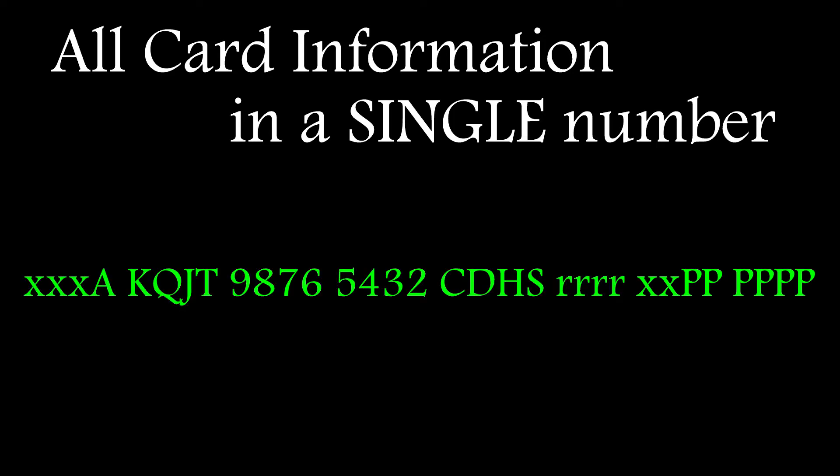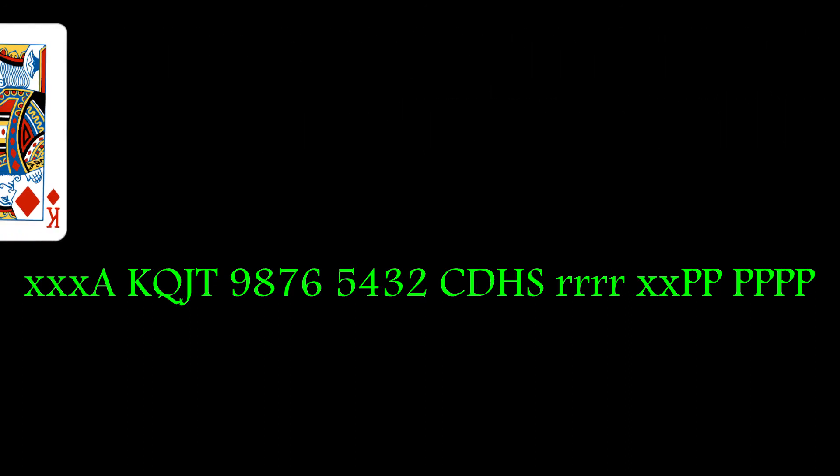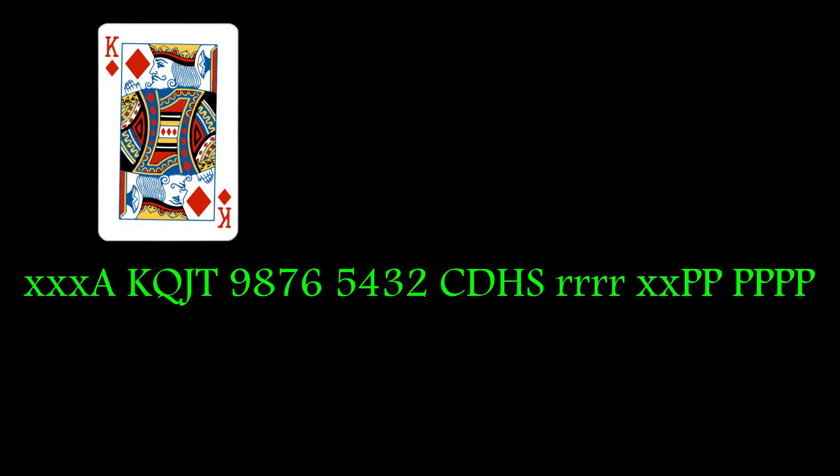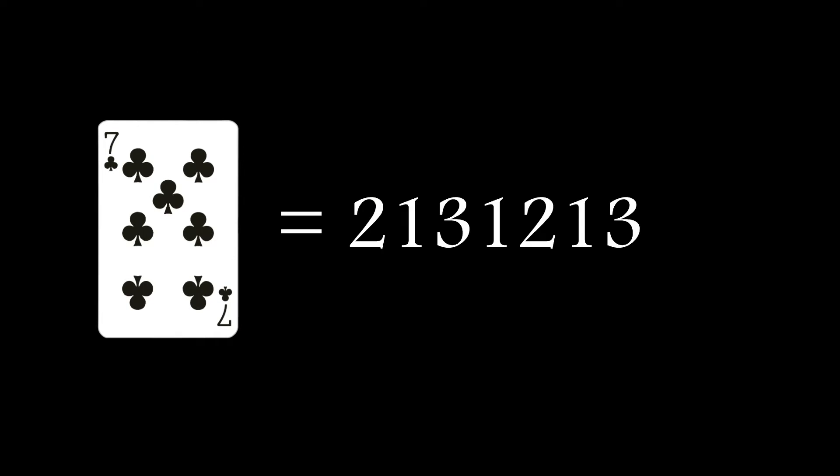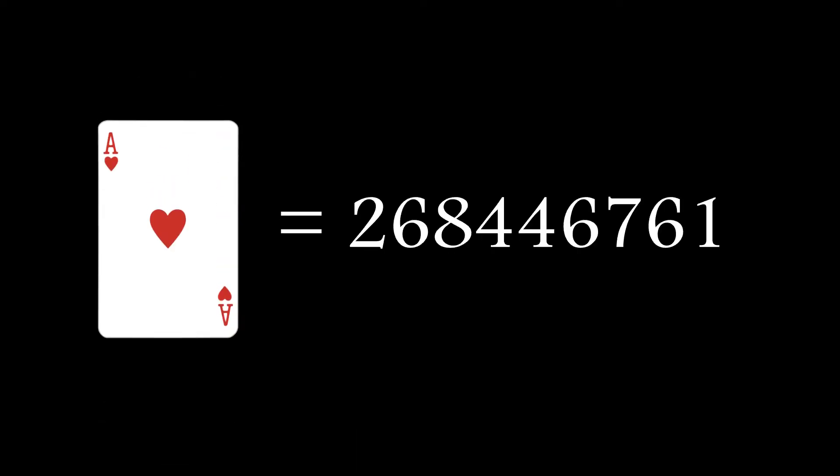By way of an example, here's the encoding for the king of diamonds. Bits are set for the king card identifier, the diamond suit as well as the rank and prime number. All that equates to a very large number which now has encoded within it all the information we need and it can be extracted using bitmasks. This only needs to be done once and is repeated for all cards in the deck.